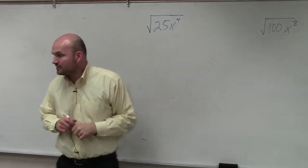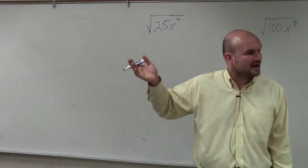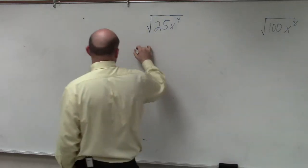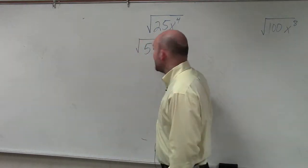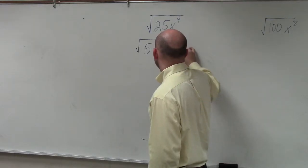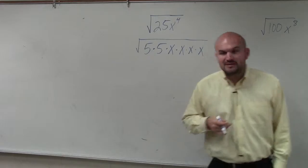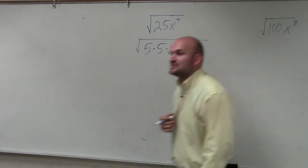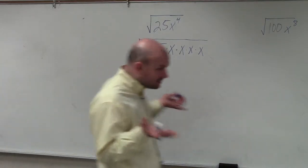So what I can do for this is I can break down 25 into a set of prime factors, which would be 5 times 5. And I can break down x to the fourth as x times x times x. Does everybody agree with me that 5 times 5 times x times x times x is the exact same thing as 25x to the fourth? Yes.